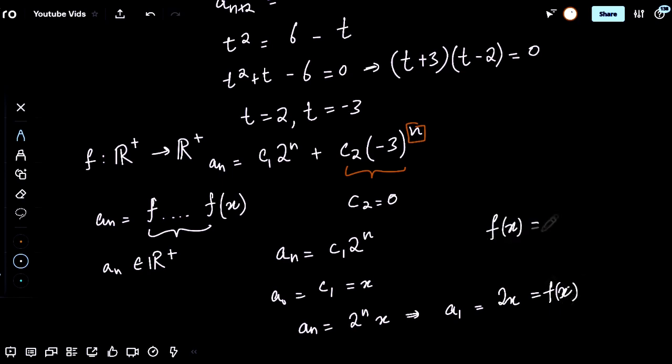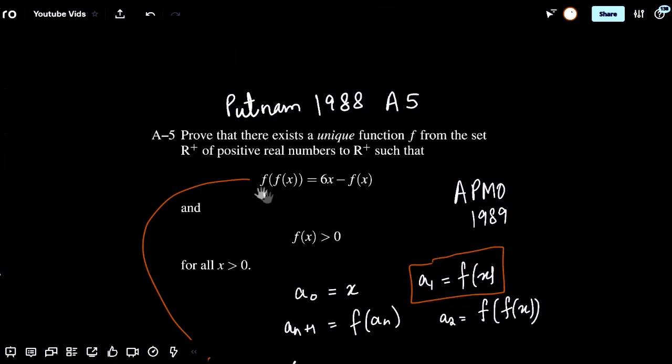f of x equals 2x, which is then a unique solution, as the problem asks for a unique function.